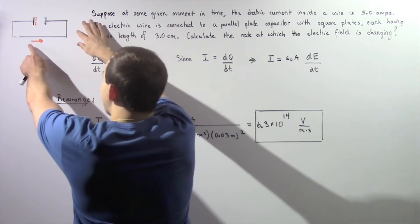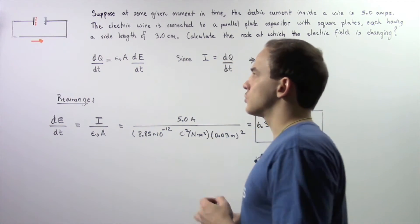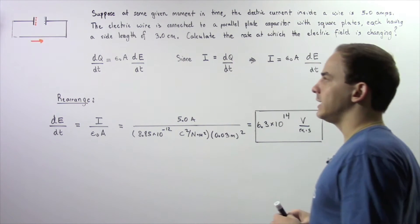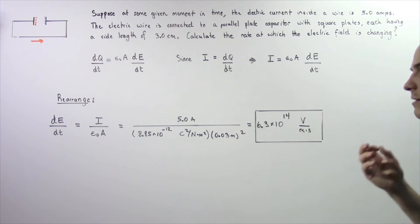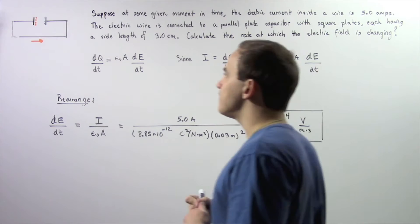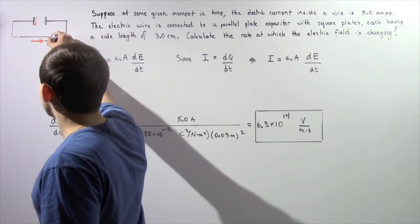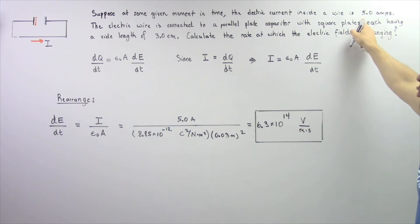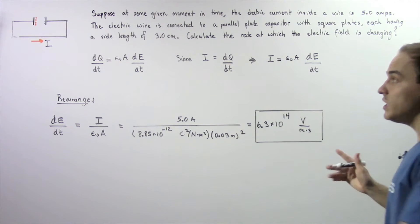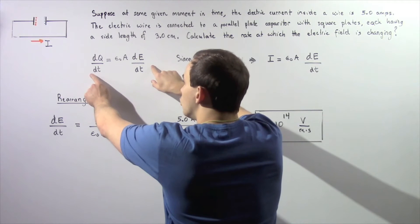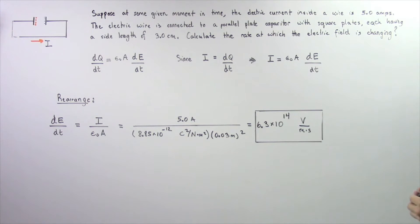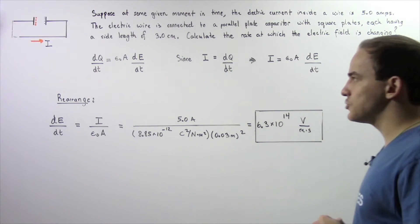Here we have a closed electric circuit that contains a parallel plate capacitor. At some given moment in time, the electric current moving through our wire I is given. We want to apply the following equation to solve for the rate at which our electric field is changing.